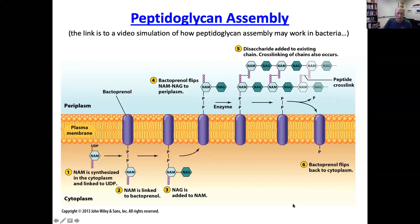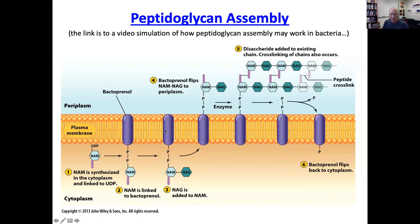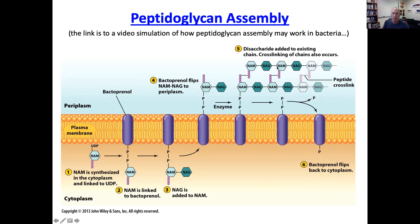I made a mistake — bactoprenol is not a protein. It's a fairly complex lipid. The peptidoglycan subunit is attached to the bactoprenol, and this bactoprenol then allows this polar molecule to flip across to the other side of the membrane, exposing it on the outside. Once it's on the outside, this subunit can be connected to the existing chains of peptidoglycan.